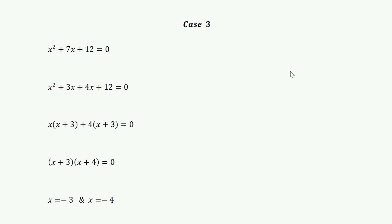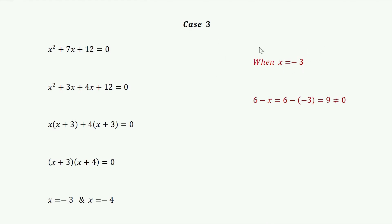Now we plug in the values of x in the base to check whether the base equals 0 or not. When x equals minus 3: 6 minus (minus 3) equals 9, which is not equal to 0, so x equals minus 3 is a solution. When x equals minus 4: 6 minus (minus 4) equals 10, which is also not equal to 0, so x equals minus 4 is a solution.